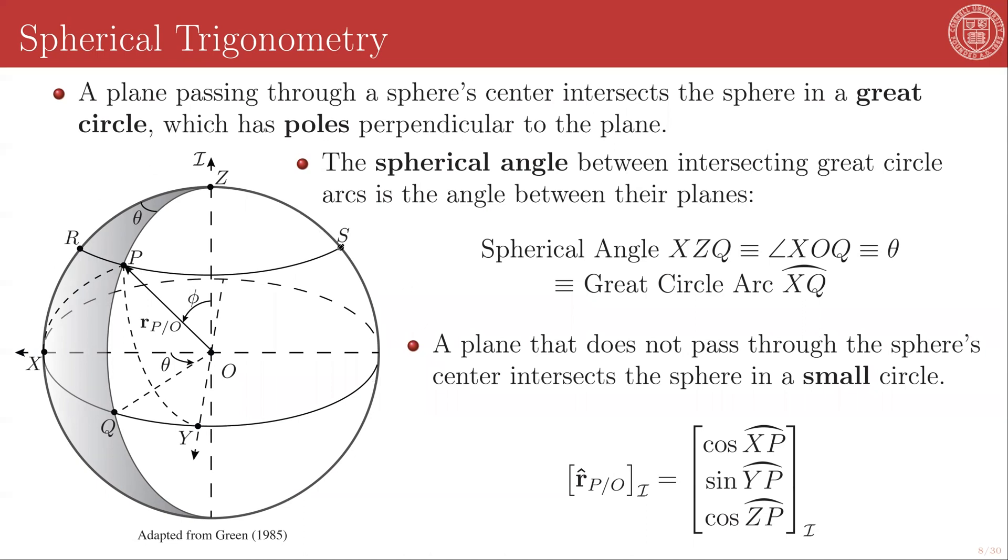But for now, let's just remind ourselves of some very basic concepts. We have a unit sphere, and we can pass planes through the sphere. Any plane passing through the center of the sphere, which we'll denote as O, intersects the sphere in what is known as a great circle. So this circle here, the one crossing X and Q and Y, that is a great circle. Anything else, any plane that doesn't pass through the center of the sphere produces a small circle.